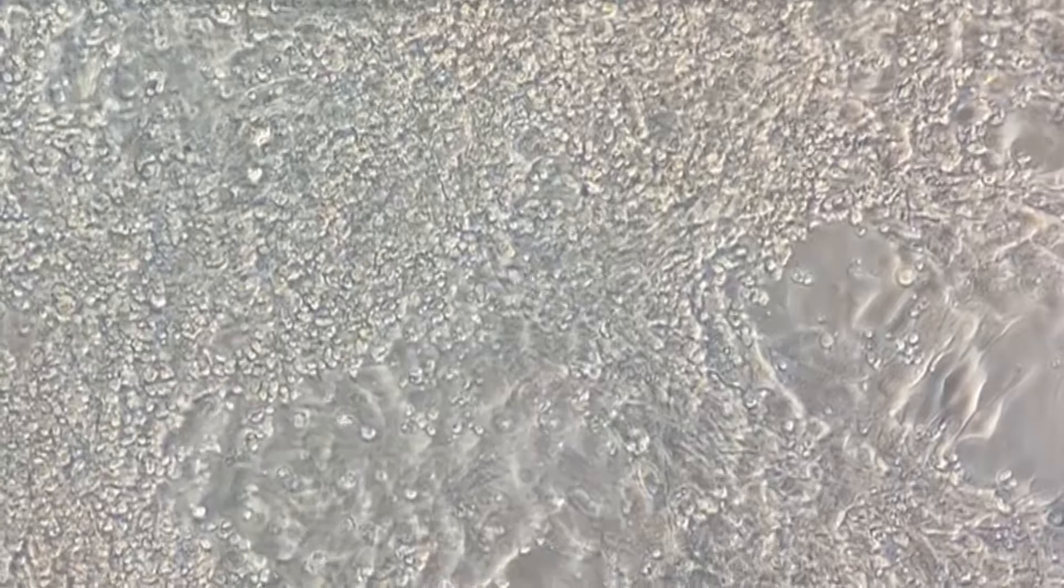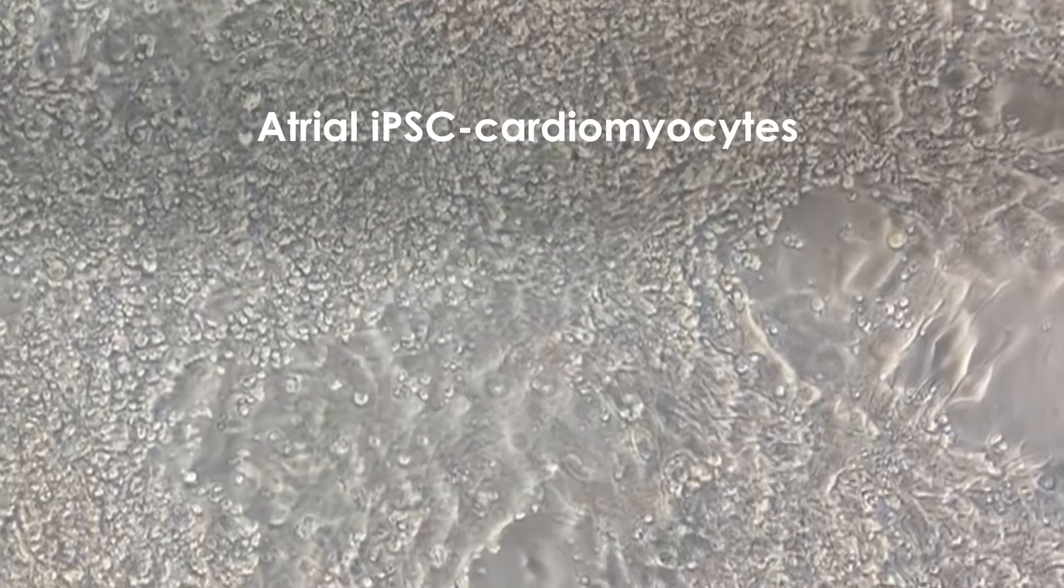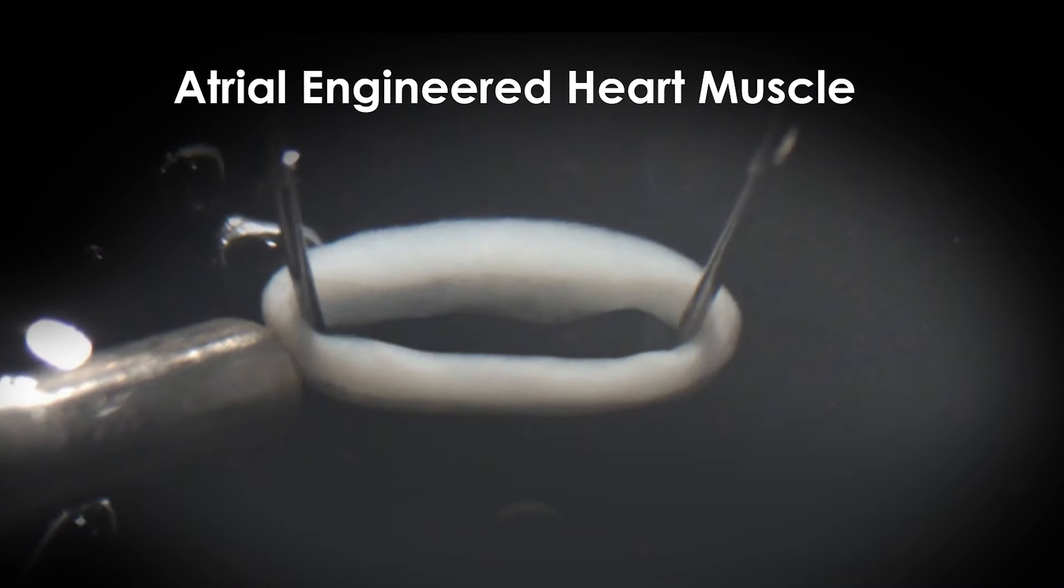Well here at the University of Göttingen we've established a cellular model of atrial fibrillation using atrial heart muscle that's been originally derived from human cells.